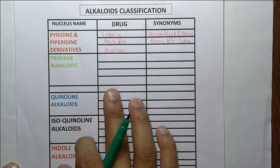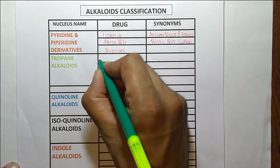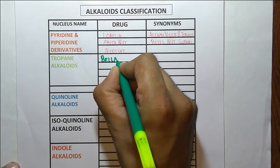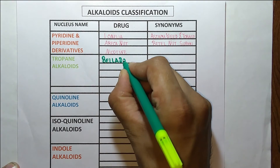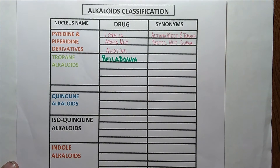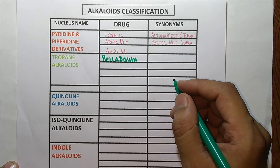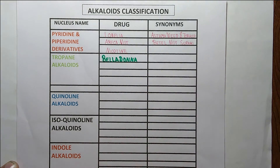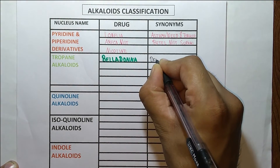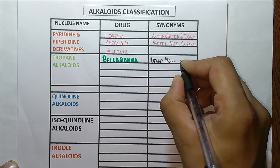Next is tropane alkaloids. The first drug is belladonna, and its synonym — which is very famous and frequently asked in various competitive exams — is 'deadly nightshade leaf.'